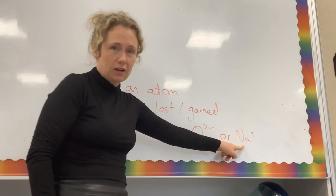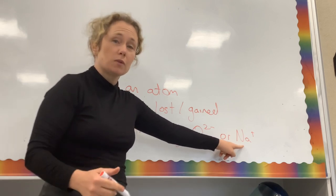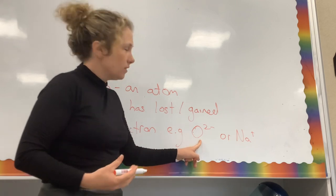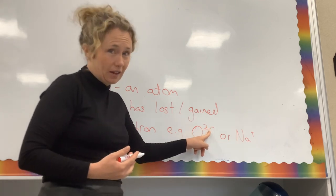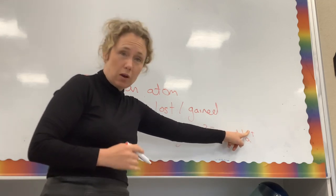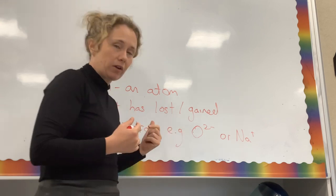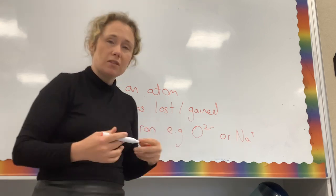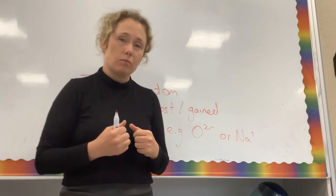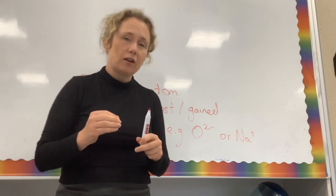If ions are negative, they've gained an electron; if they're positive, they've lost an electron. If you're asked for the electron arrangement of an ion, first work out how many electrons the atom normally has, then adjust: if it's two-negative, add two electrons; if it's positive, take away that electron. If it says 'ground state,' the atom is in its normal state — no adjustment needed.